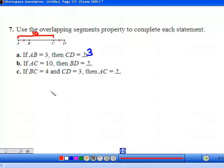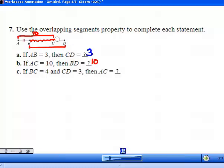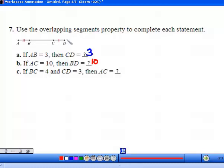...from A to C is 10, what is BD? Again, they have these two pieces that are congruent and they share this common piece that's the same as itself, so this would also be 10.